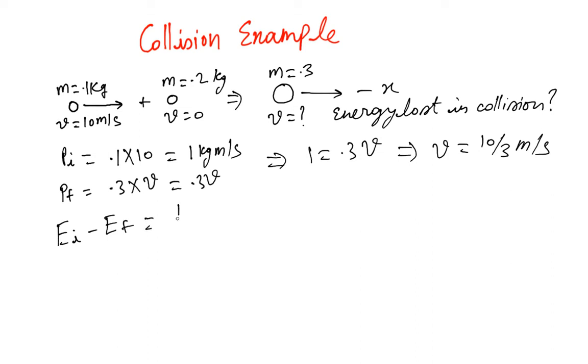E initial is half times 0.1 times v squared. All the energy is kinetic energy. This is minus half multiplied by 0.3 multiplied by 10 over 3 squared. Let's solve this.